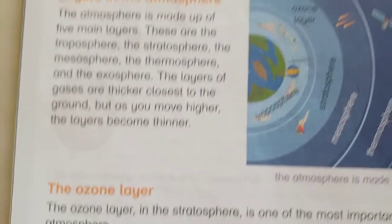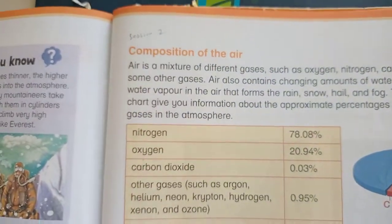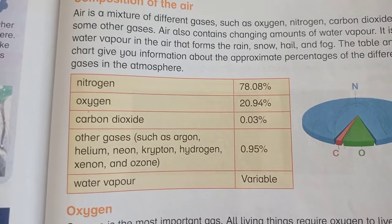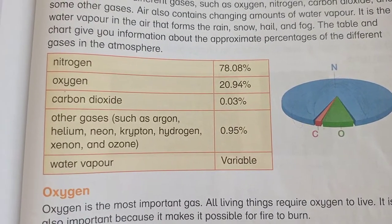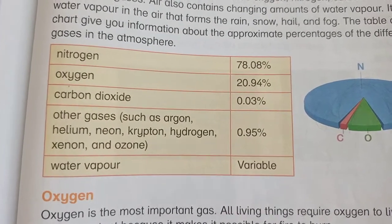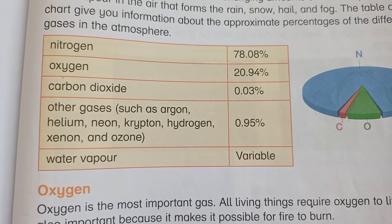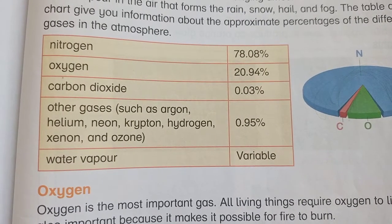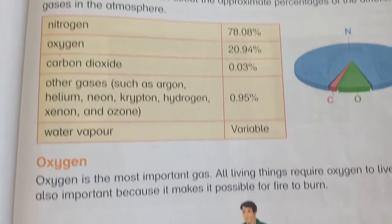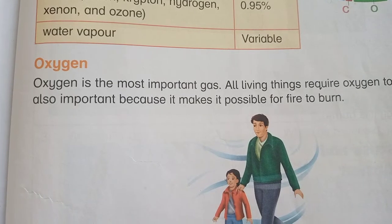Then we also learned about the composition of air. Name the gases which are present in the air: number 1 is nitrogen, that is about 78%; oxygen, about 20%; carbon dioxide, about 0.03%; and other rare gases. Oxygen is a very important gas — we use it in our respiration.